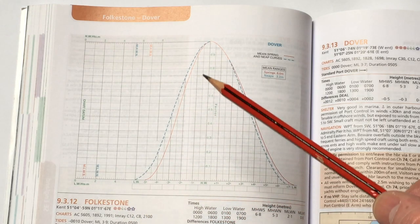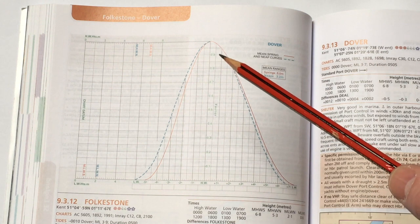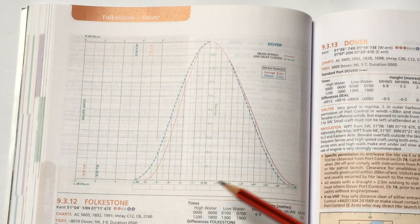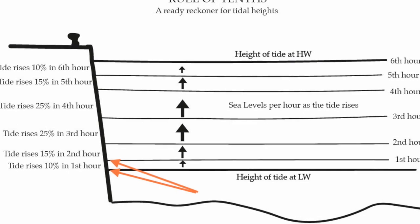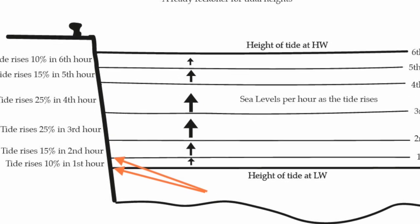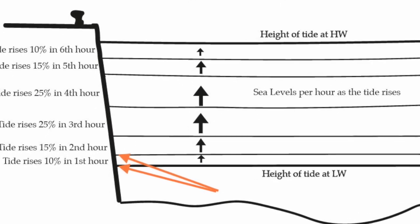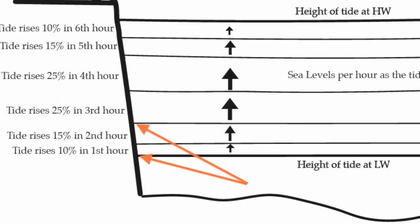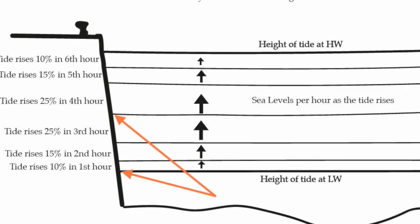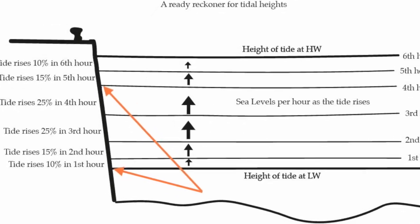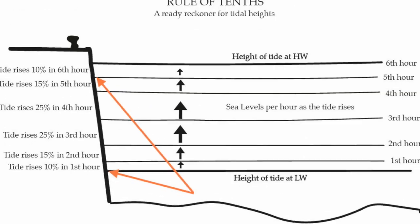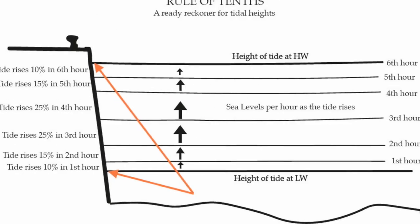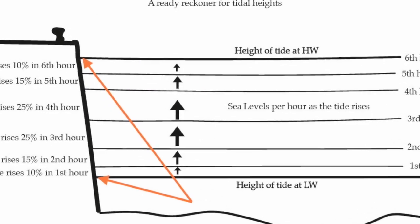The tide does not flow evenly — it starts and finishes more slowly than when it's in full flood or full ebb in the middle of the six-hour period. Using the rule of tenths we can estimate that the tide rises or falls 10% in the first hour, 15% in the second, 25% in the third, and then another 25% in the fourth, then 15% in the fifth, and 10% in the sixth hour.